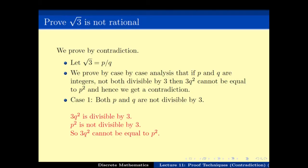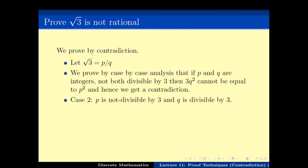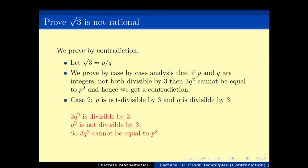Case 2: p is not divisible by 3 but q is divisible by 3. Again, the same argument: 3q² is divisible by 3, and p is not divisible by 3 so p² is not divisible by 3. Hence, 3q² cannot equal p².